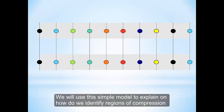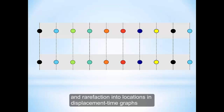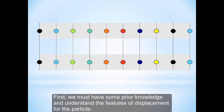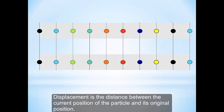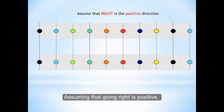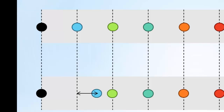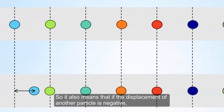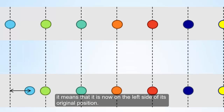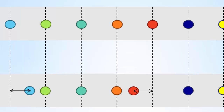We use this simple model to explain how to identify regions of compression and rarefaction in a displacement-distance graph. First, we must have some prior knowledge and understand the features of displacement for a particle. Displacement is the distance between the current position of the particle and its original position. We assume that going right is positive. If a particle has moved to the right of its original position, it has a positive displacement. If the displacement of the particle is negative, it means it is now on the left side of its original position.